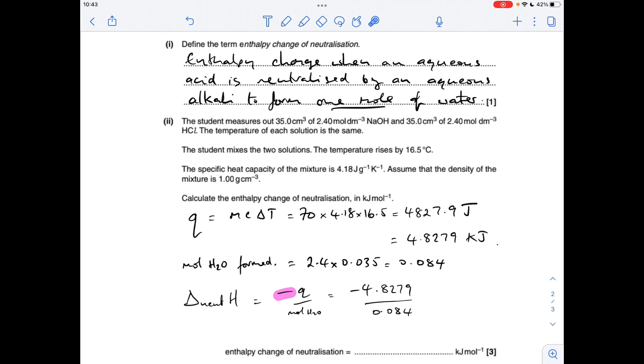So the enthalpy change of neutralisation is therefore minus Q, I'll explain the minus in a second, minus Q, but remember that's got to be the kilojoules value, divided by the moles of water formed, so those numbers there, and that gives us a value of minus 57.5 kilojoules per mole. Just highlight that minus sign.